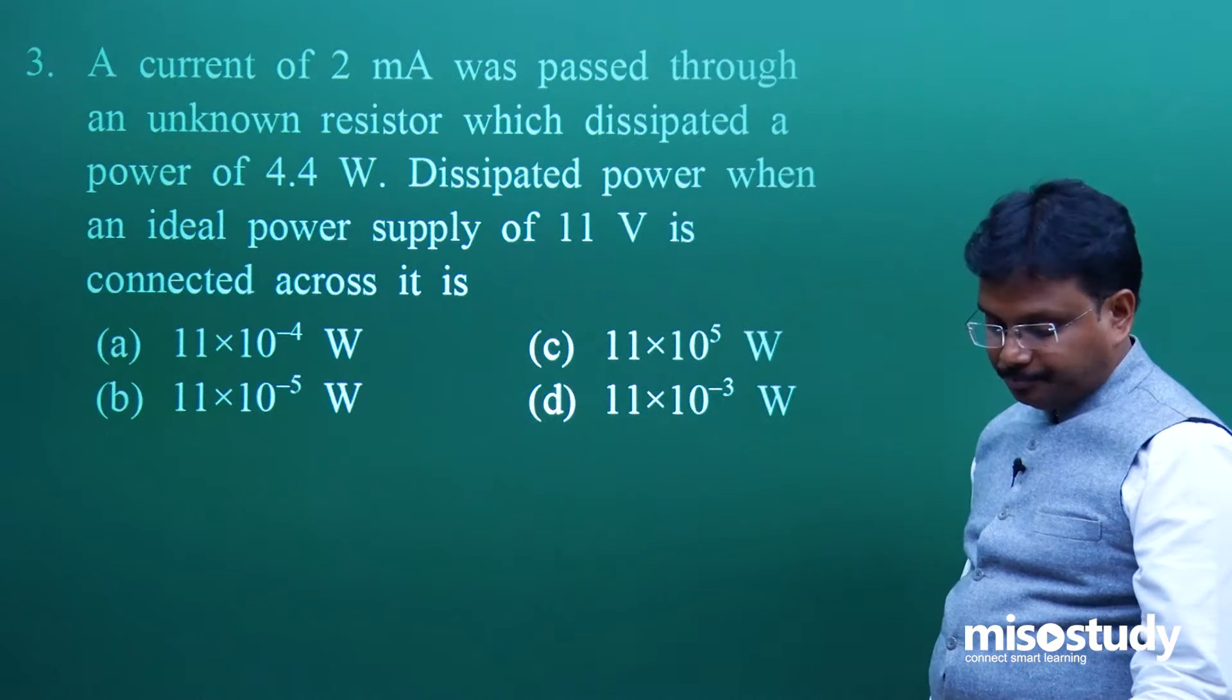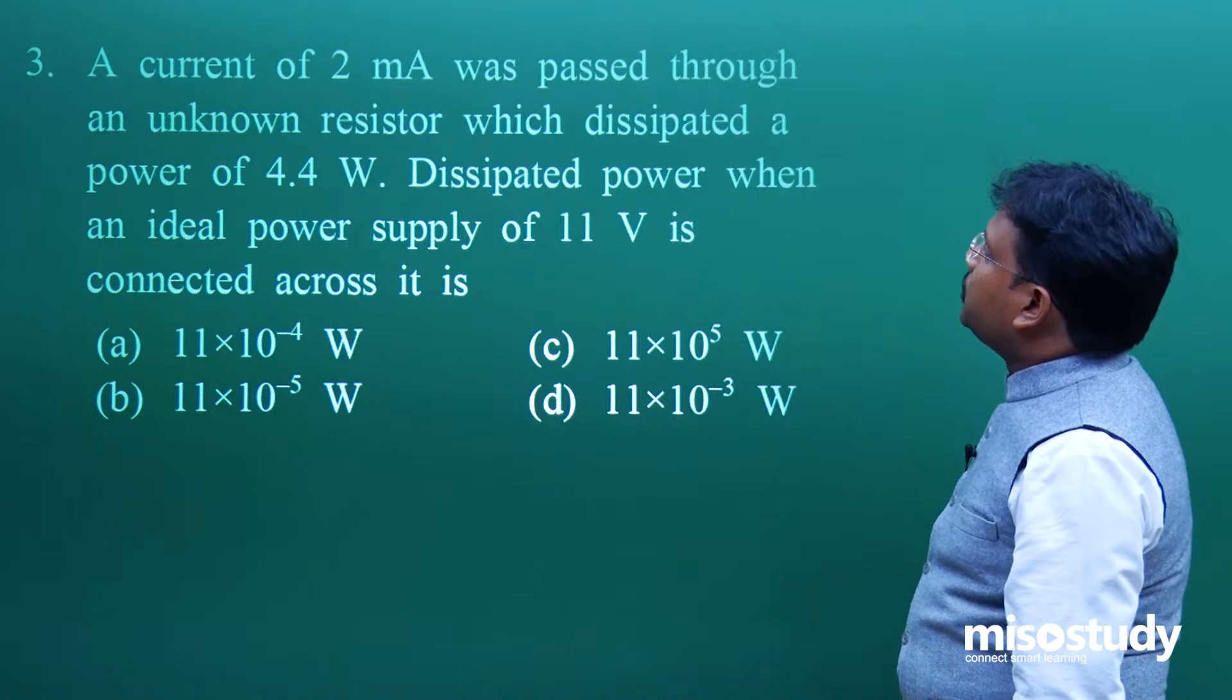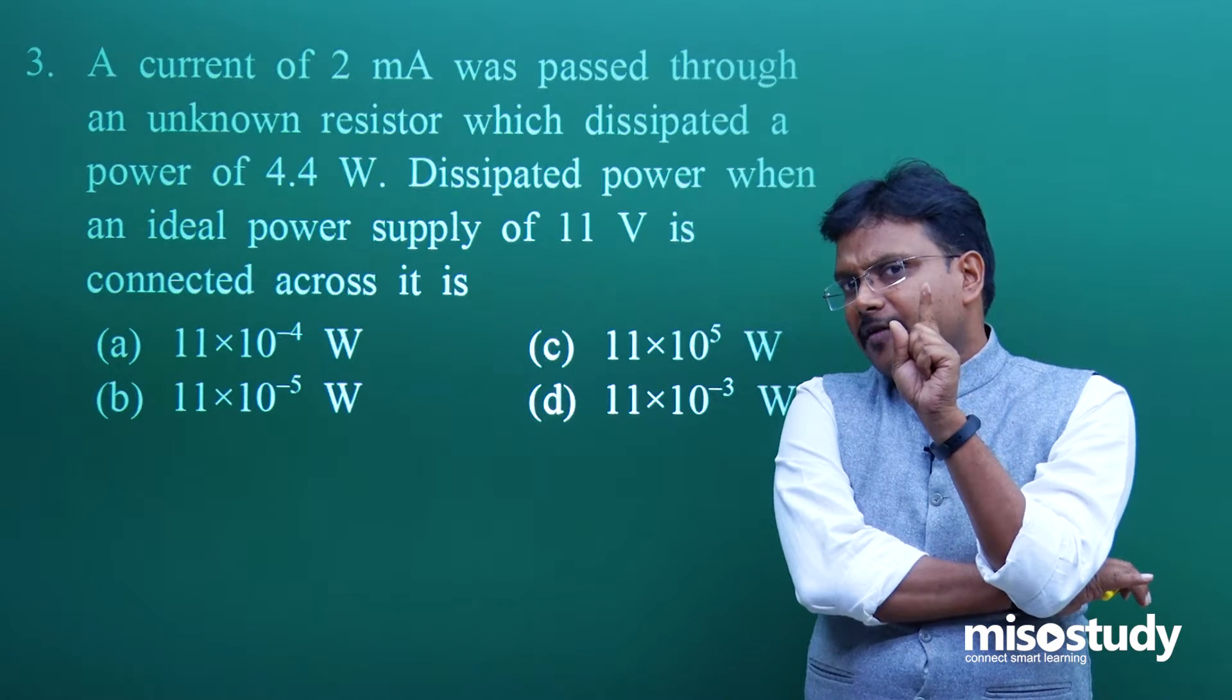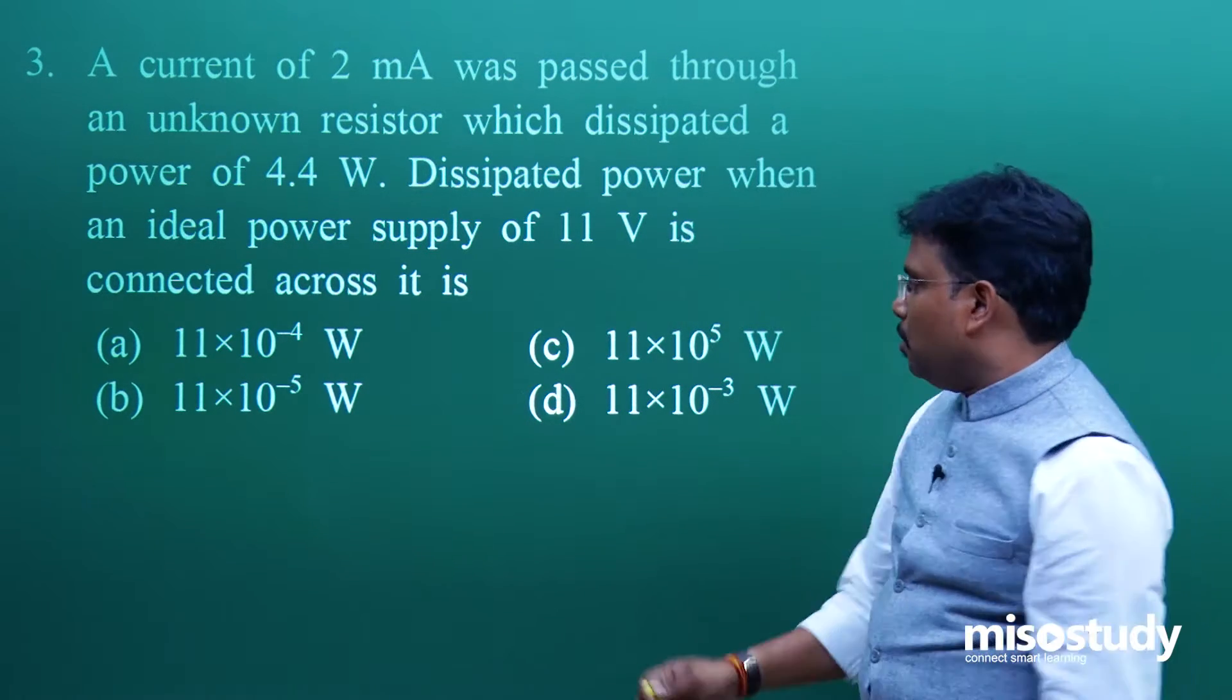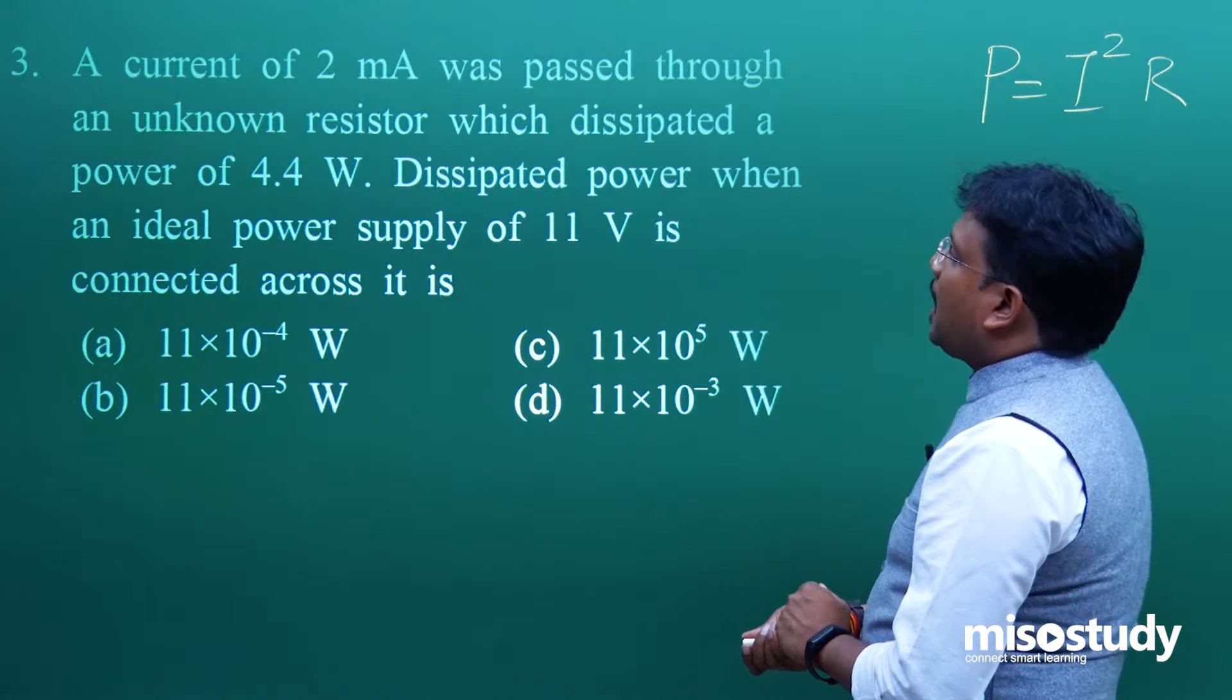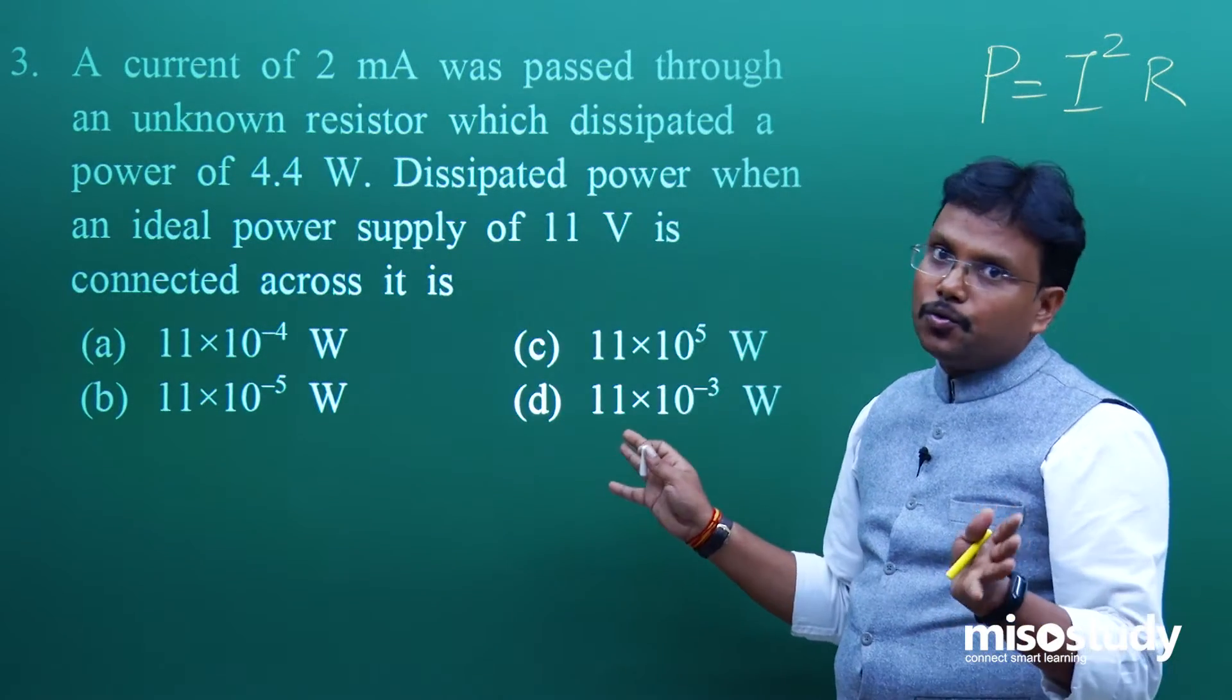Question number 3: a simple question from current electricity, class 12. A current of 2 milliampere was passed through an unknown resistor which dissipated a power of 4.4 watt. From the first line, is it possible to find the value of resistance? Yes, sure we can, because P equals I square R. Dissipated power when an ideal power supply of 11 volt is connected across the same resistor - so first you find the value of resistance, then use that value.